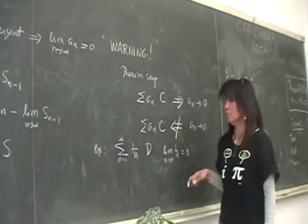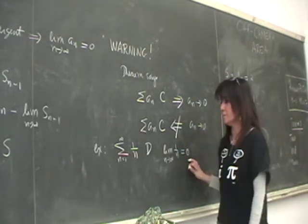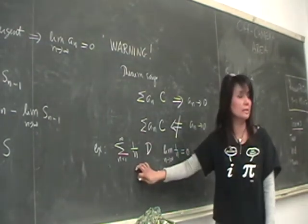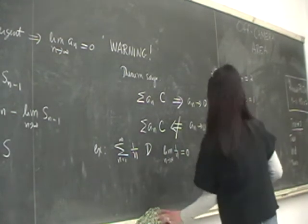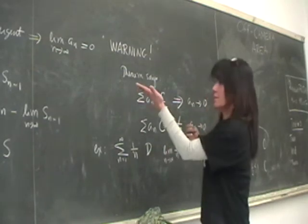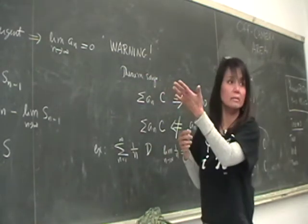So if on your test you said, well, the limit is 0, if the nth term is 0, you cannot conclude that it is convergent. Did you understand that, guys? So, but it's not that the theorem is useless, right?